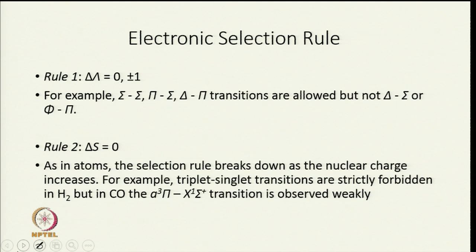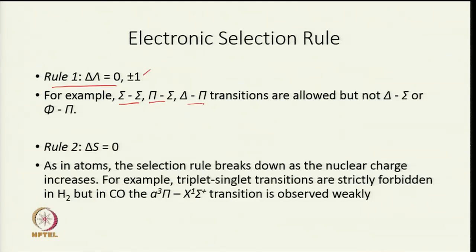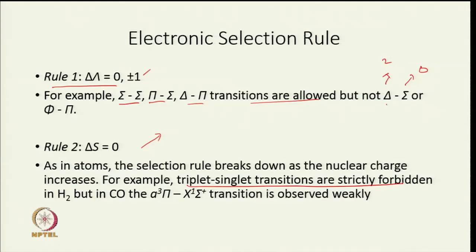Now the selection rules. Rule 1: ΔΛ = 0 or ±1 — only then is an electronic transition allowed. Sigma-to-sigma, pi-to-sigma, and delta-to-pi transitions are allowed, but delta-to-sigma is not (ΔΛ = 2). Rule 2: ΔS = 0, meaning triplet-to-triplet and singlet-to-singlet transitions are allowed, but triplet-to-singlet transitions are strictly forbidden.